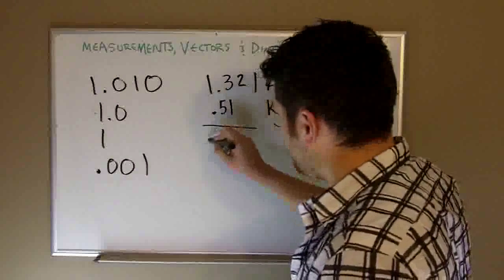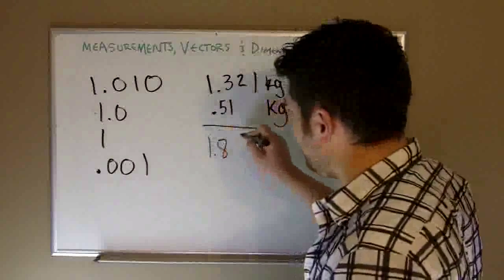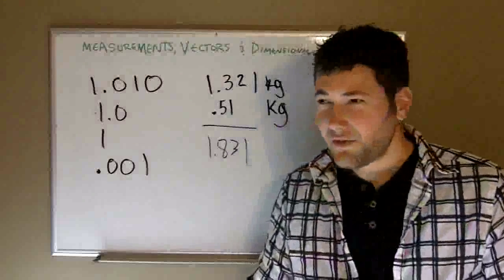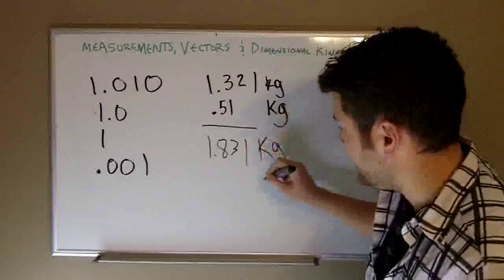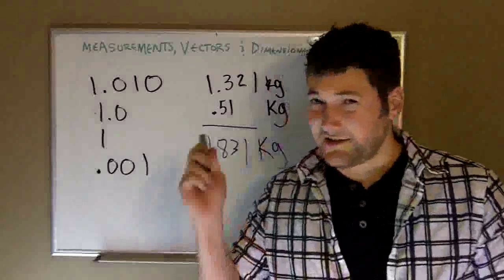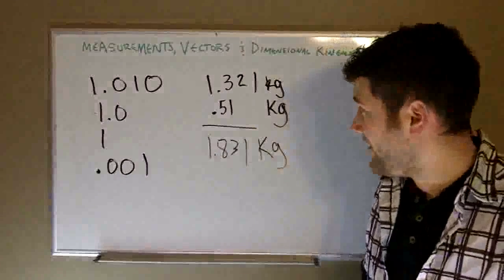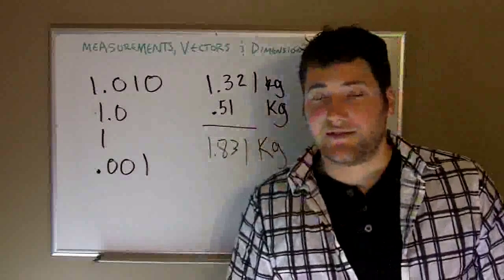So, this is pretty easy. It's just going to be 1.831, just simple math. But you turn this in and this is going to be kilograms because they're both kilograms. And you're going to turn this in and some professors will be like, no, that is not right. And why? Because we need to look at the significant figures.